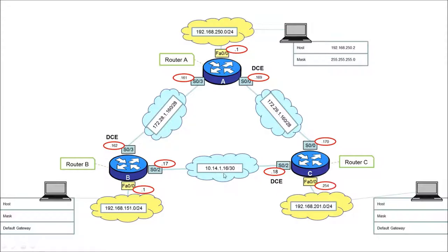B to C uses 10.14.1.16 on serial 0/2 — remember it doesn't have to be 0/2 at both ends. The subnet is slash 30 — this is the traditional way of doing point-to-point links, though slash 31 became more the norm. You can also use unnumbered interfaces since it's point-to-point. Slash 30 reveals .16 as the subnet, .17 as the first usable address, and .18 as the last, because .19 is the broadcast. Those are the interfaces between routers A, B, and C, and the subnets hanging off them.